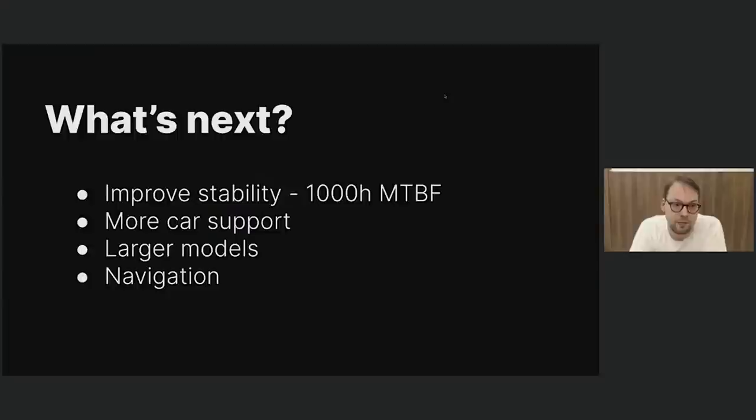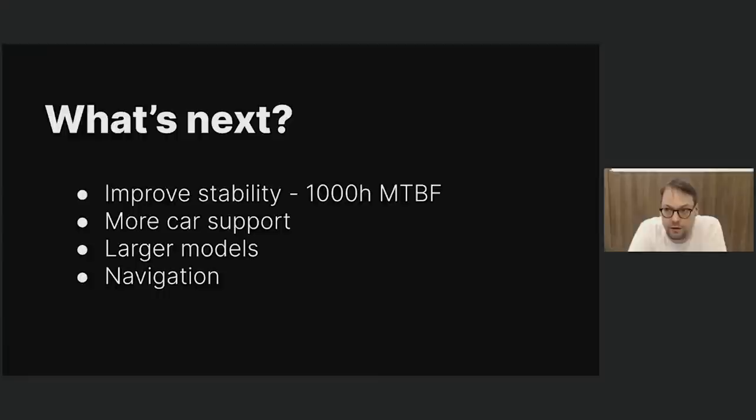What's next? The most important part is stability. There are a few features that still need to be developed, but stability is very important. We're targeting 1000 hours between failures — meaning unplanned disengagements. This can be anything from a hard reboot, which is very rare now, to communication errors between processes if you don't meet the real-time deadline, or unexpected planner failures or model failures.